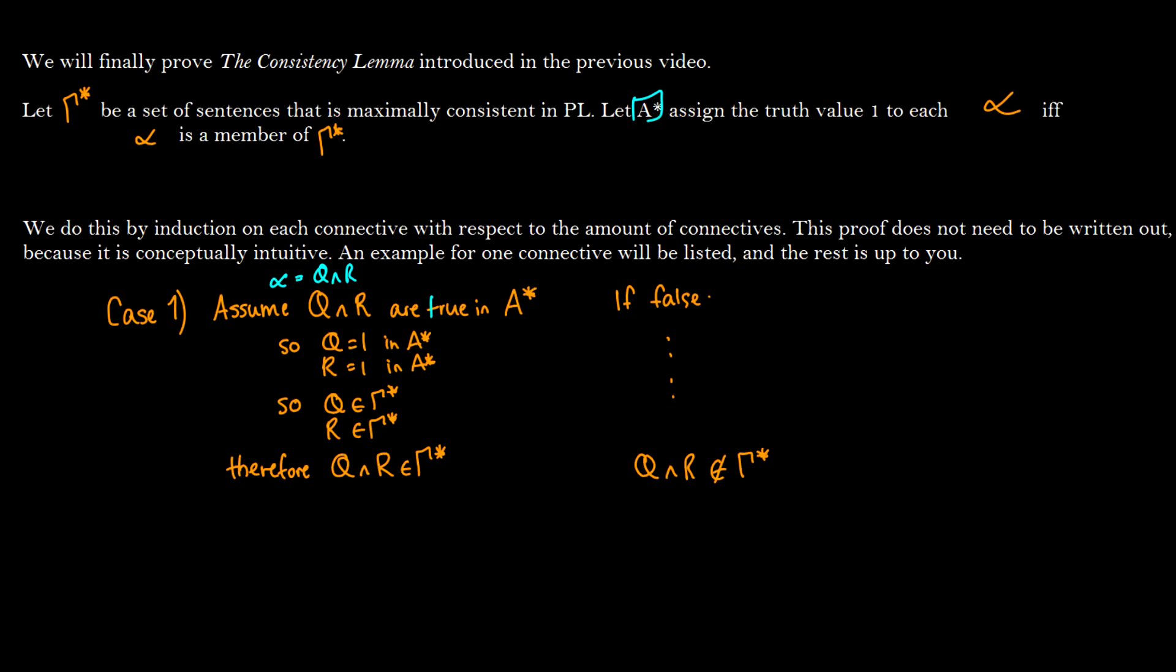If it's true in a star, then q is true in a star and r is true in a star. And because a star is a subset of gamma star, then q is going to be true in gamma star and r is going to be true in gamma star. Therefore q and r are going to be in gamma star.